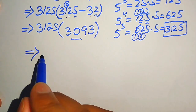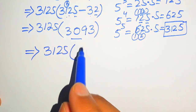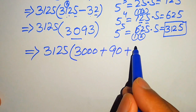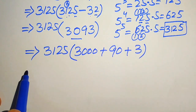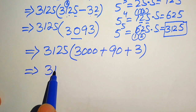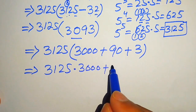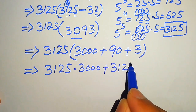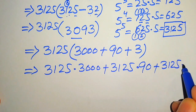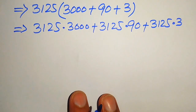In the next step we rewrite 3093 as 3000 plus 90 plus 3. This allows us to multiply 3125 by each of these three values separately.